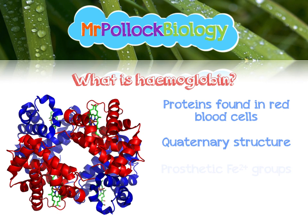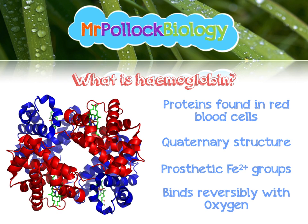They also have these things called prosthetic groups, which are non-polypeptide chains incorporated into the structure of the peptide itself. In this case, they are haem groups — Fe2+ groups. Haemoglobin has four of these, one per subchain, and this is what gives haemoglobin its oxygen-carrying ability. These prosthetic groups are what make haemoglobin bind reversibly with oxygen.